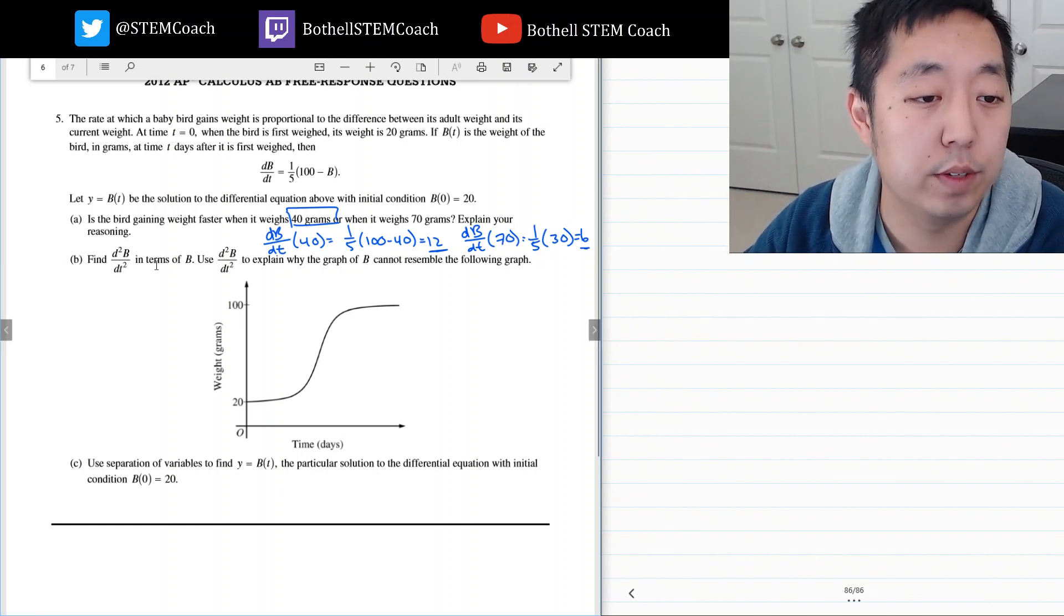Okay, so find the second derivative in terms of b and use the second to explain why the graph of b cannot resemble the following graph.